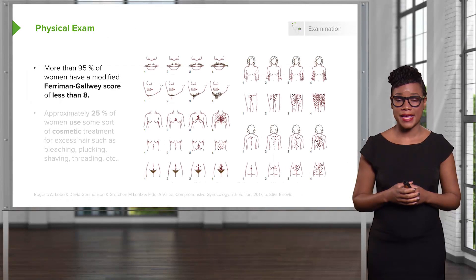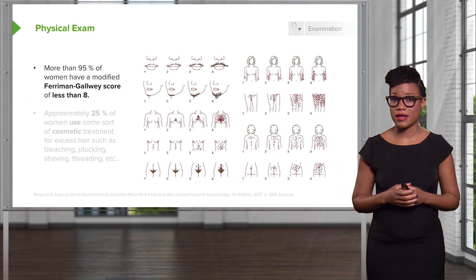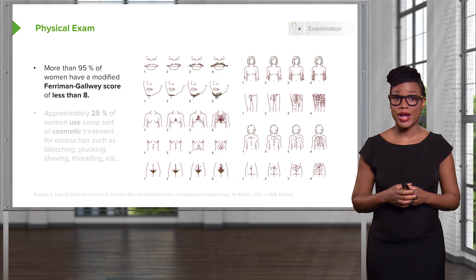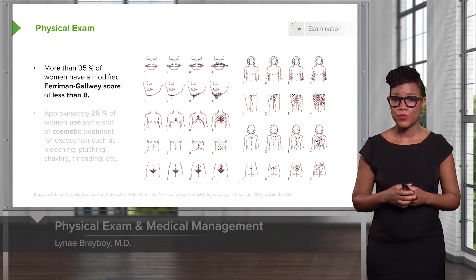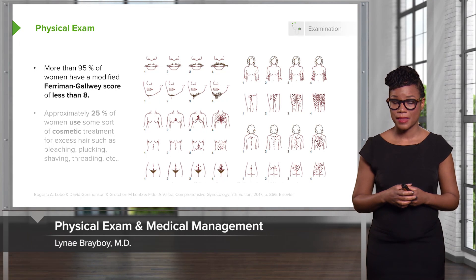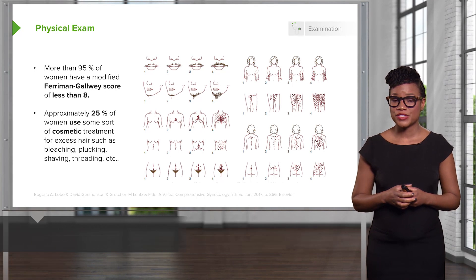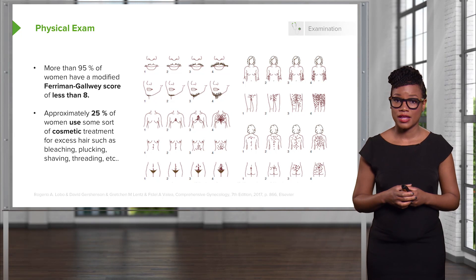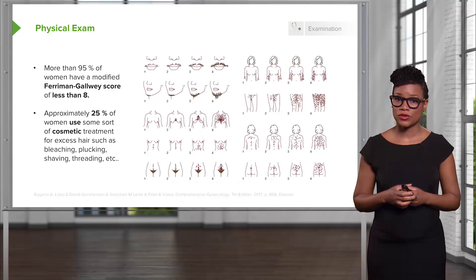Upon physical exam, you can find hair growth in a male distribution pattern. Traditionally, we used a Ferriman-Gallwey score, and a score greater than 8 was associated with hirsutism. However, 25% of patients who have hirsutism use some sort of cosmetic treatment for excessive hair, including bleaching, plucking, shaving, and threading. So this has become less useful as a clinical assessment, but it's important to note.